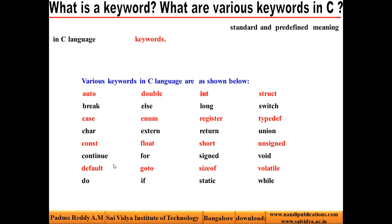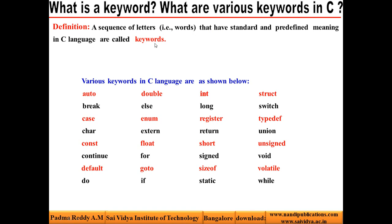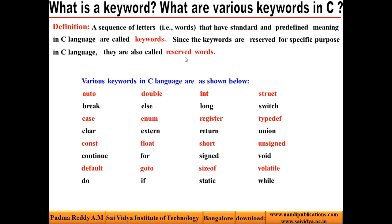All these keywords are reserved for a specific purpose in C language, and hence these keywords are also called reserved words. A sequence of letters called words that have standard and predefined meaning in C language are called keywords. Since the keywords are reserved for a specific purpose in C language, they are also called reserved words. Various keywords in C language are shown below — these are all the keywords available in C language.